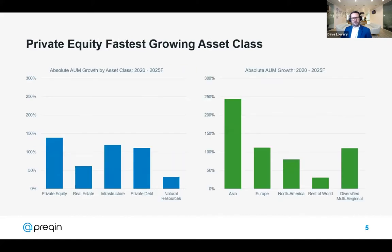Looking at absolute growth across asset classes, private equity stands out above both infrastructure and private debt. Across regions, we're expecting solid growth in Asia, far outpacing all other regions. Europe is likely to grow faster than the US — potentially a story of the market catching up in maturity. With many European government bonds still trading at zero or negative yields, this is continuing to drive European allocations towards alternative investments. Growth in diversified multi-regional funds is also quite interesting, as these funds don't have a specific target geography.